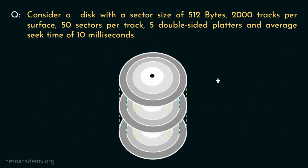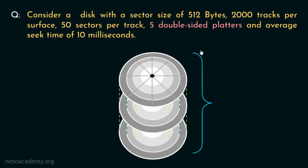So this is our disk pack. Since there are 2000 tracks per surface, that means there are 2000 cylinders. Thereafter, there are 50 sectors per track, meaning all the tracks have 50 sectors in them. Now in this entire disk pack, there are 5 double-sided platters, meaning all 5 platters have 2 surfaces each.